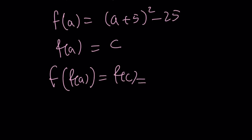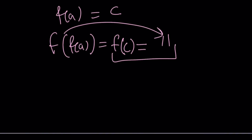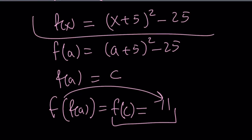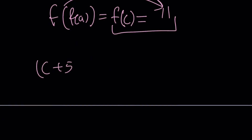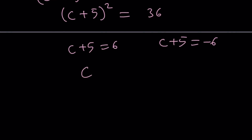Set f of a equal to c. Then f of f of a is f of c, and f of c equals 11 because we know f of f of a is 11. So we're solving the basic equation f of c equals 11. What is f of c? Replace x with c in the vertex form: c plus 5 squared minus 25 equals 11. That gives us c plus 5 squared equals 36, so c plus 5 is either 6 or negative 6, meaning c is either 1 or negative 11 — the same as the first method.